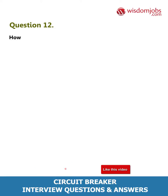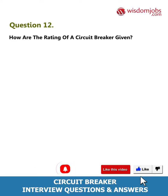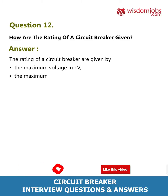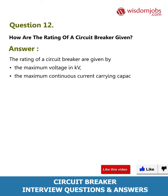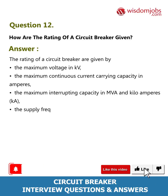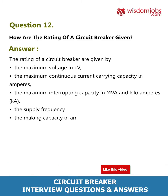Question 12: How are the ratings of a circuit breaker given? Answer: The ratings of a circuit breaker are given by the maximum voltage in kV, the maximum continuous current carrying capacity in amperes, the maximum interrupting capacity in MVA and kiloamperes, the supply frequency, and the making capacity in amperes.